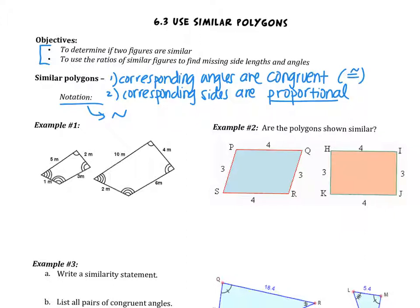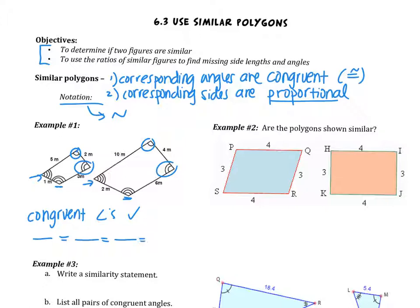In example number one, these figures are similar. The first thing we notice is that all the corresponding angles are congruent — one tick mark, two tick marks, three tick marks, three tick marks, four tick marks, four tick marks. So we know we have congruent angles. But that alone does not mean the polygons are similar. We also have to show that their sides are proportional, so we need to set up the ratios of the sides. We have four pairs of sides, so we need four ratios. The first figure has sides of one, two, three, and five.